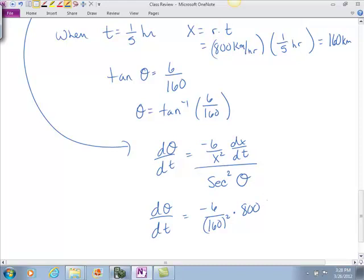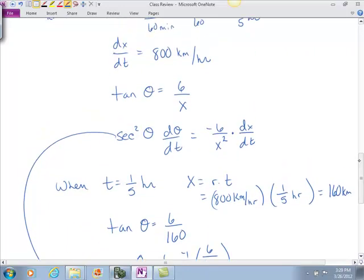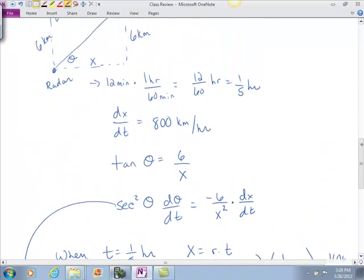Kilometers per hour, and this is kilometers. And then we're going to divide that by secant squared, which is going to be the secant of the inverse tangent of 6 over 160. And then you'll square that. Actually, it probably would have been easier to just go ahead and figure out the secant, wouldn't it? Instead of doing the inverse tangent.